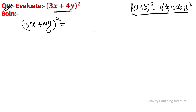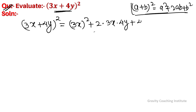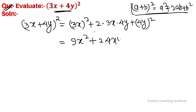So we have 3x whole square plus 2 into 3x into 4y plus 4y whole square. This equals 9x square plus 24xy plus 16y square, which is the required answer.